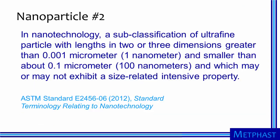The ASTM standard gives us an additional definition for nanoparticle, saying that in nanotechnology it is a subclassification of ultrafine particle with lengths in two or three dimensions greater than 0.001 micrometer, or 1 nanometer, and smaller than about 0.1 micrometer, or 100 nanometers, and which may or may not exhibit a size-related intensive property. This definition talks about nanoparticles as a subclassification of ultrafine particles. Notably, whereas the ISO definition required all three dimensions to be at the nanoscale, this ASTM definition includes particles with two or three dimensions between 1 and 100 nanometers — meaning it includes nanofibers, nanotubes, and nanorods as nanoparticles.